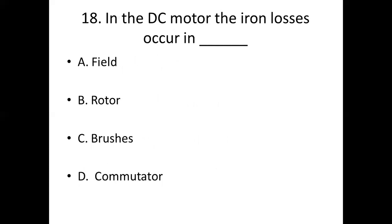Eighteenth bit. In the DC motor, the iron losses occur in dash. Option A: field. Option B: rotor. Option C: brushes. Option D: commutator. Answer: Option B, rotor.